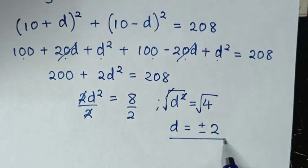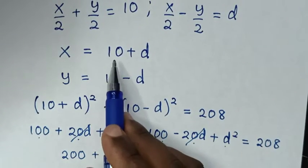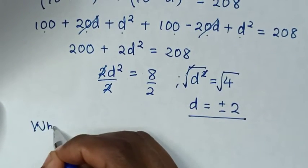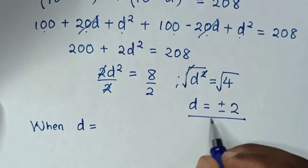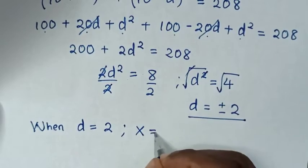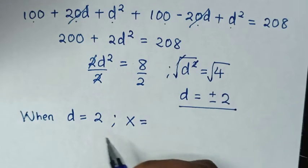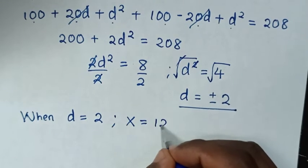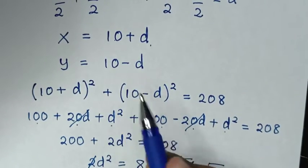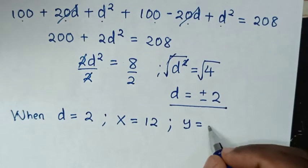Then from these values of d, to get the value of x from x is equal to 10 plus d: when d is equal to positive 2, then x will be equal to 10 plus 2, so x is equal to 12. And the value of y, from y is 10 minus d, it will be y is equal to 10 minus 2, which is 8.